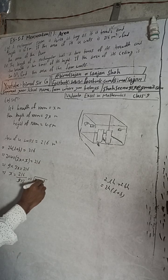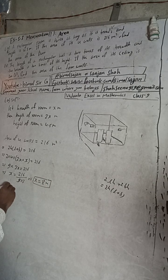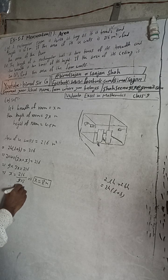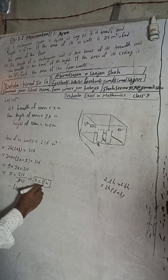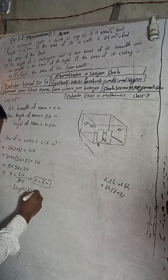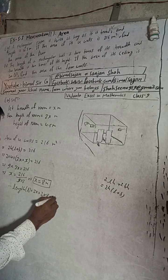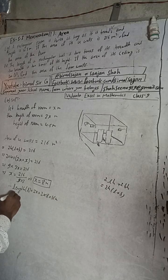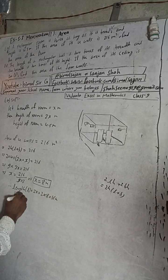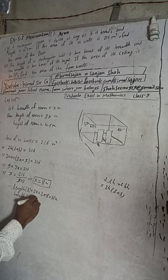Therefore, length of the room l equals 2x, so 2 times 8 equals 16 meters. And breadth b equals x, that is 8 meters.